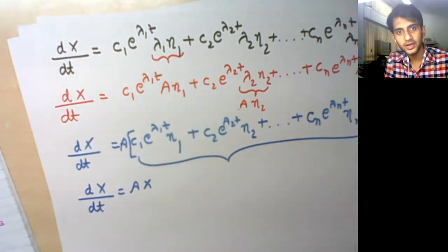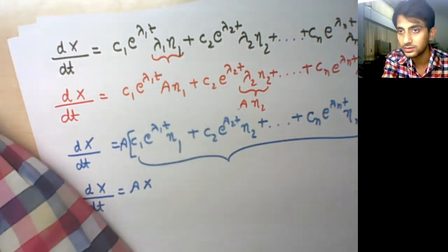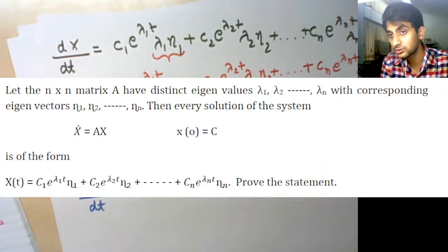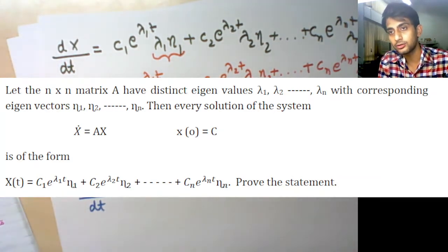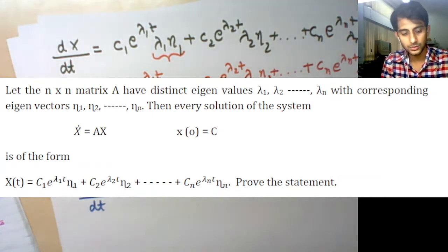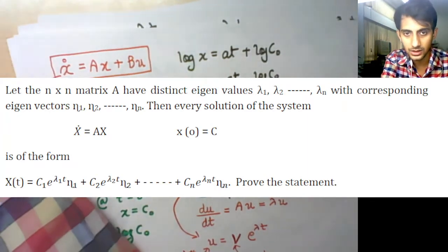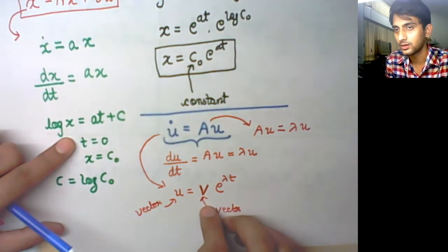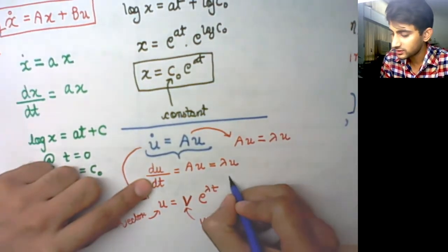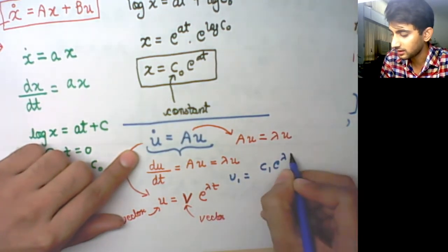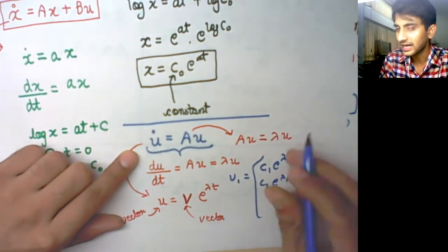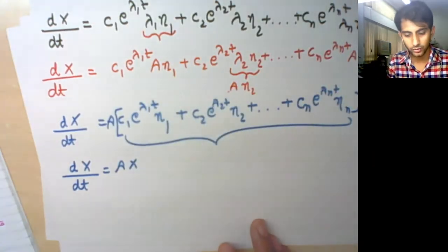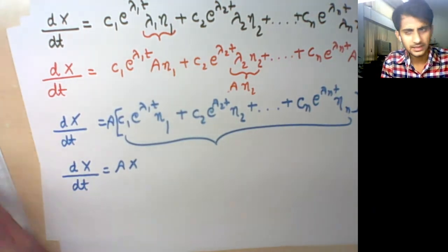So we get dx/dt = Ax, which is exactly the given equation. In this backward fashion we have proved the statement. The constants c₁, c₂, c₃ correspond to initial conditions x(0)₁, x(0)₂, x(0)₃ — they are the constants of integration, coming from the constant vector. So u is c₁e^(λ₁t) + c₂e^(λ₂t) multiplied by spanning eigenvectors η₁, η₂, η₃ — this is Question 40 from your question bank.